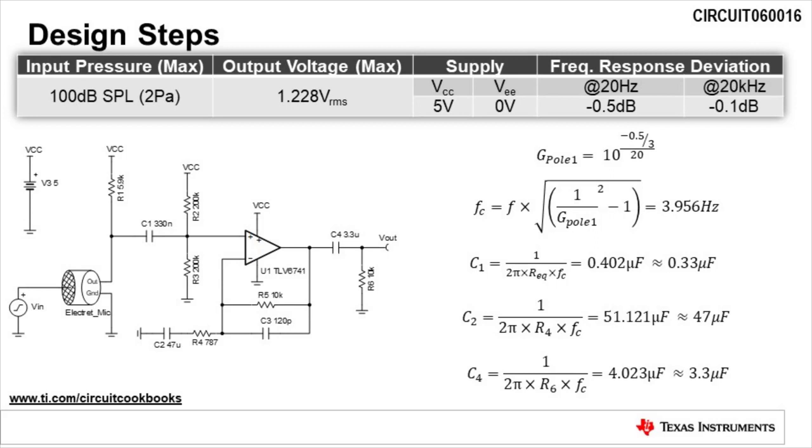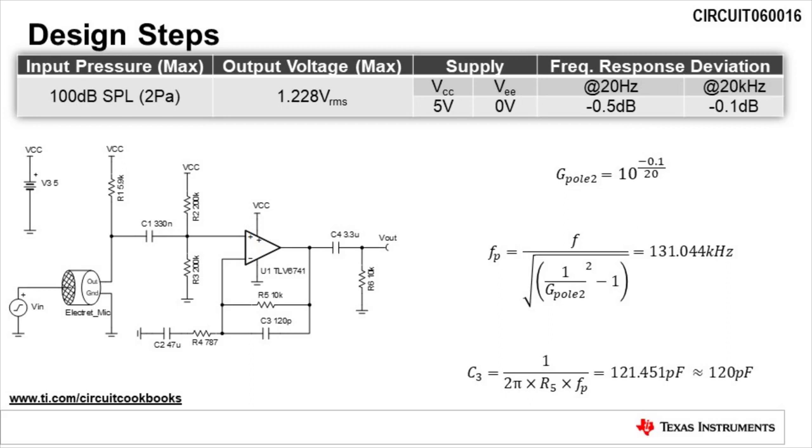Lastly, we need to calculate the value for capacitor C3 to set the low pass filter cutoff frequency. This is calculated in a similar manner as the components to set the high pass filter cutoff frequency. To calculate a maximum frequency response deviation of negative 0.1 dB at 20 kilohertz, we need to use the equation for FP to calculate the pole location of the filter. FP is calculated to be 131.044 kilohertz. C3 is equal to 1 divided by 2 pi times R5 times FP and is calculated to be 121.451 picofarads. We will use the next closest standard capacitor value of 120 picofarads for this design.